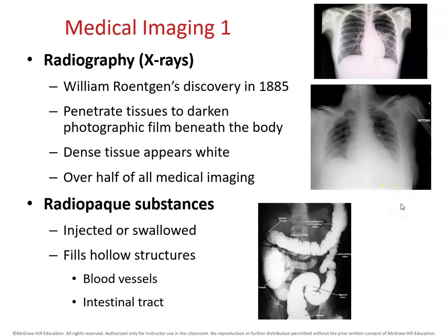We can use radiopaque substances — they can be swallowed, and barium is very frequently used for this. This is what we use when we want to see inside a hollow structure, such as the GI tract of a patient who has swallowed barium. They can also be injected, and when we do that, we can see the insides of blood vessels.